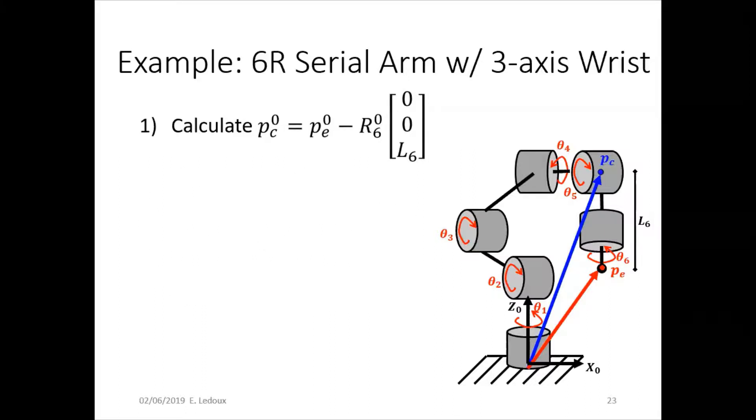So step one is calculate PC from PE, the rotation, and the wrist length. So that is shown here. This is pretty much just vector math. So this vector equals this vector minus the one that goes here to here. And that's a minus because of the direction that the rotation went.